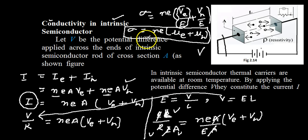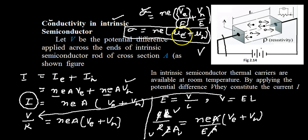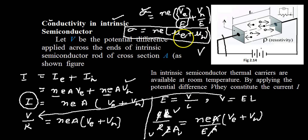Conductivity depends upon the mobility of electrons and holes. The mobility of electrons is somewhat greater than the mobility of holes — there is a small difference. Conductivity is also proportional to the number density. This is the complete expression for the conductivity of an intrinsic semiconductor.